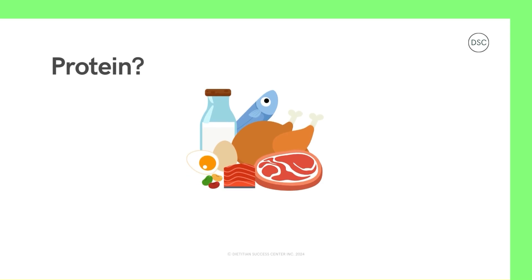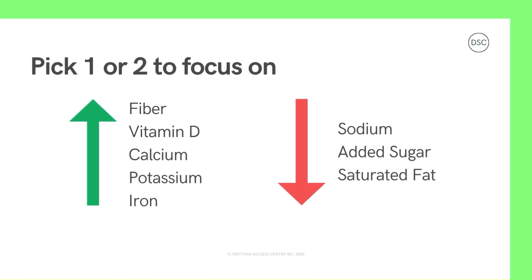Depending on your nutrition goals, you may be looking for more protein as well. Keep in mind there is no percent daily value for protein because according to the FDA, the Food and Drug Administration, most Americans get enough protein in their diet if they're eating a variety of foods, so it's not a health concern. But if you're looking for more protein, you will have to look at the amount in grams and compare that to your goal amount. It might feel a little overwhelming to focus on all of these nutrients, so instead pick one or two to focus on based on your nutrition goals. Your dietitian can help you decide which nutrients to pay attention to on the nutrition label.